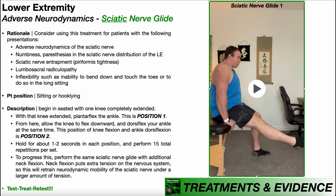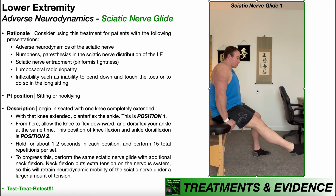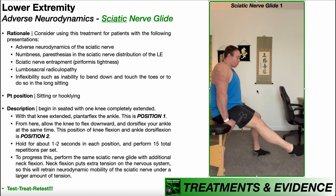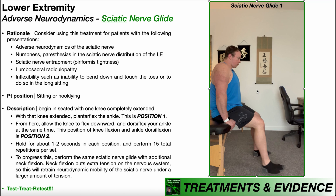From position one, you allow the knee to flex downward and at the same time dorsiflex the ankle — knee flexion and ankle dorsiflexion. This is position two. To perform this sciatic nerve glide, you oscillate between the two positions: knee extension with plantar flexion, then knee flexion with dorsiflexion. Hold about one to two seconds in each position for a total of 15 repetitions per set.